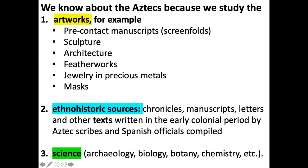In the last portion of this lecture, I'd like to come back to the question: how do we know? We know about the Aztecs because we study several lines of evidence. For example, we study Aztec artworks — they were very creative people who made numerous artworks in various media. They made manuscripts that look like screen folds and had libraries full of these books, telling us what the Aztecs thought, believed, and how they recorded history. Then we have sculpture, architecture, feather works — very unique to this region — jewelry, precious metals, masks, and numerous other artworks.